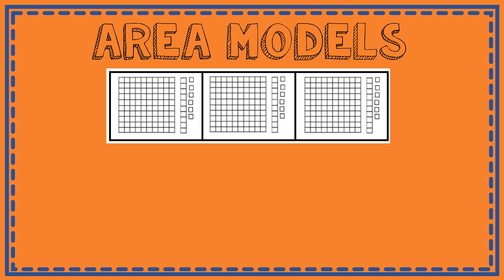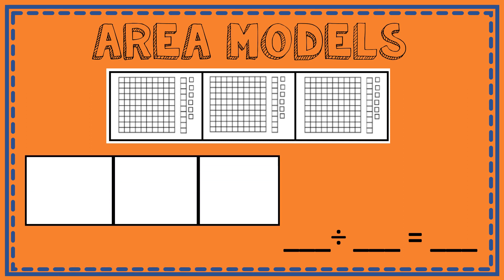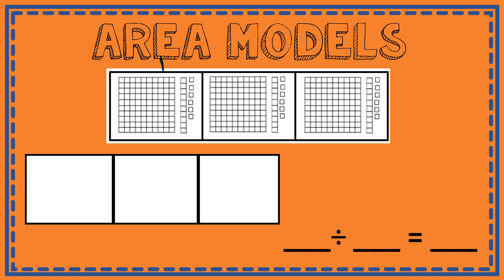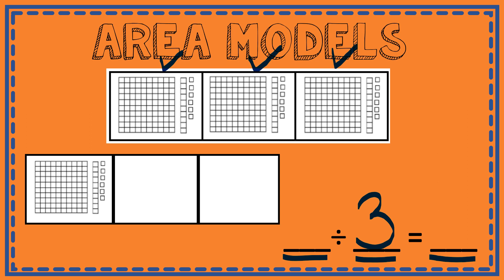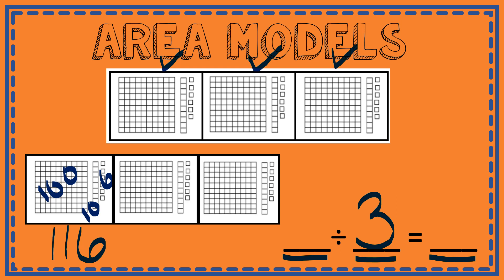Here is an example of another area model. In this case you've been given the model with hundreds, tens, and ones, and you have to figure out which numbers go into the division equation. I'm looking at this model and I see that it has three parts — one, two, three — so I know my divisor is going to be 3. When I count what's in each group, I see 100, a 10, and six ones — so that number is 116 in each group.